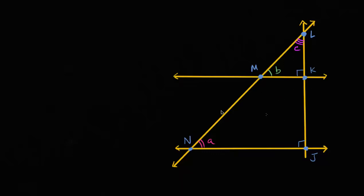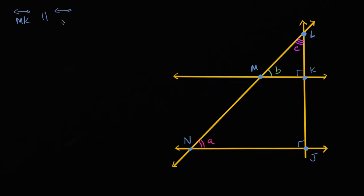We have an interesting looking diagram here. Let's say we know a few things about this diagram. We know that line MK is parallel to line NJ. So this line is parallel to this line. This is line MK, and this is line NJ.